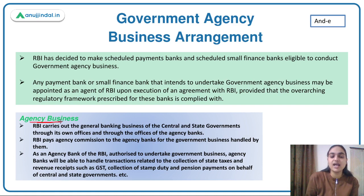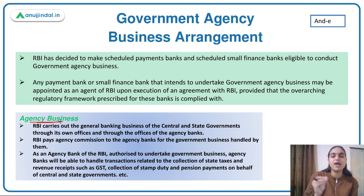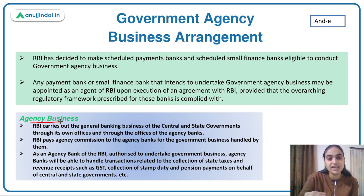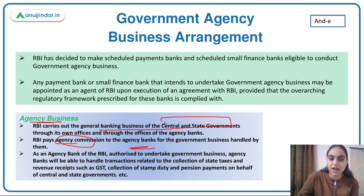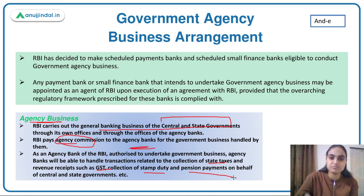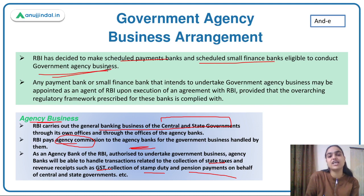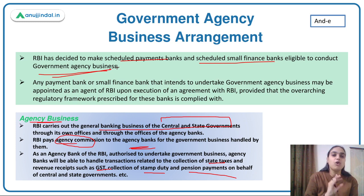By agency business, these banks act as agents of the RBI, which itself acts as agent of the government to perform certain functions — for example, paying pensions on behalf of the government or collecting taxes like GST and stamp duty. RBI pays an agency commission to these banks. RBI carries out the banking business of central and state governments through these agency banks. Recently, RBI notified that scheduled payment banks and small finance banks can conduct this agency business.